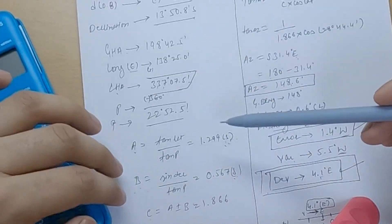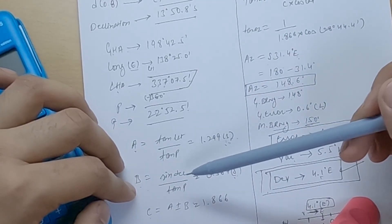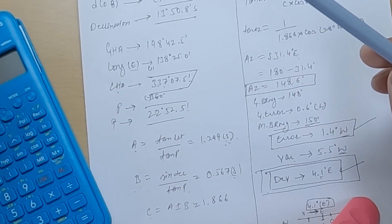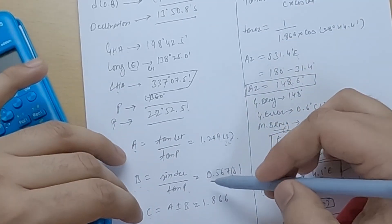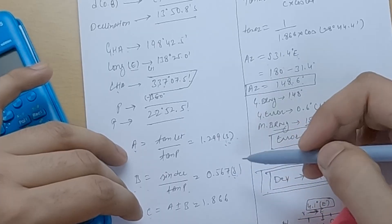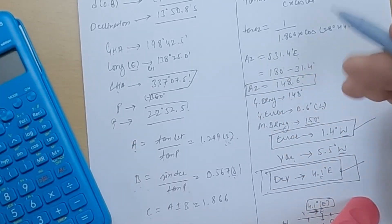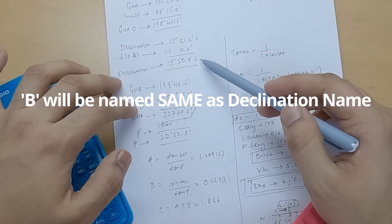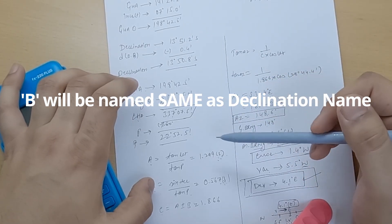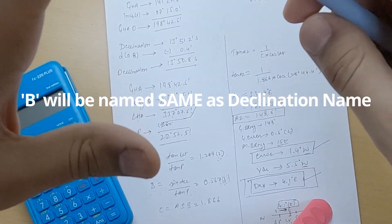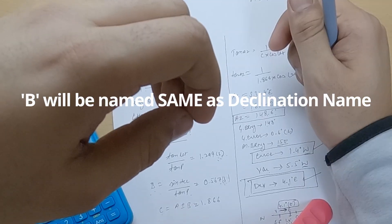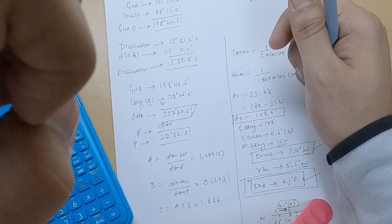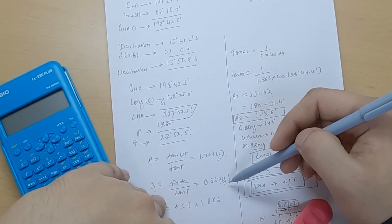Now find the value of B. The formula is: B = sin(declination) ÷ tan(P). Using the calculator, B = 0.567. Name B the same as the declination. The declination here is south, so B is south — S 0.567.